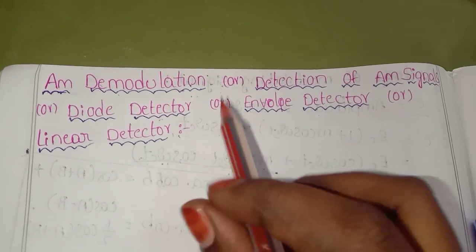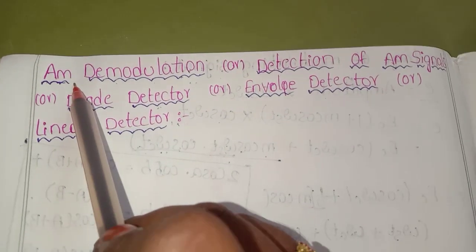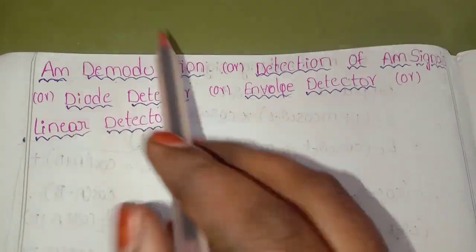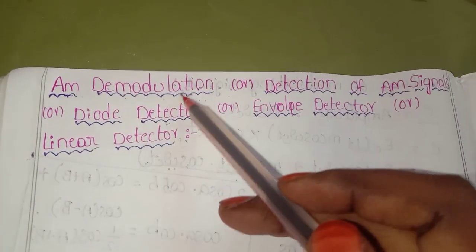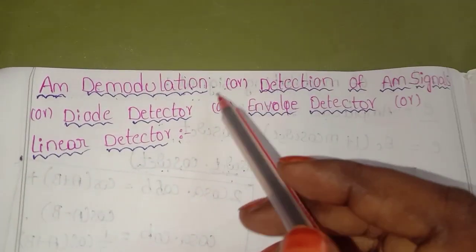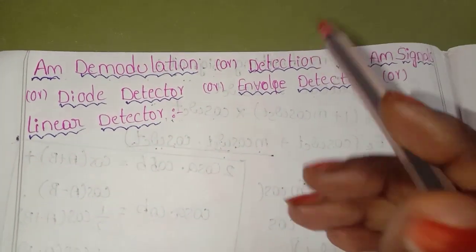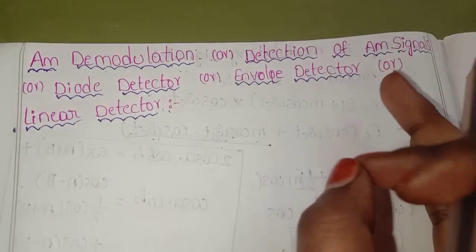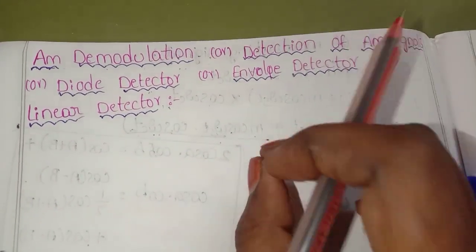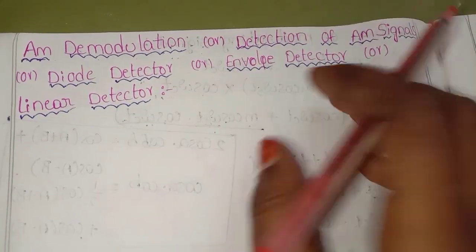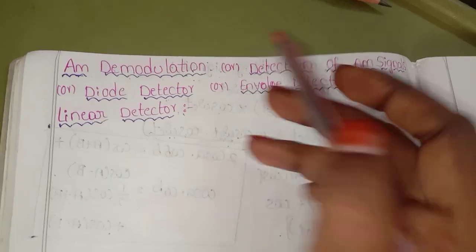Friends, today's topic is AM Demodulation. AM means Amplitude Modulation Demodulation. In this video, I will show you Amplitude Demodulation and the circuit diagram. First, I will show you the topic of Demodulation. If you want to subscribe to my channel, please do subscribe.